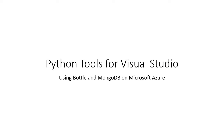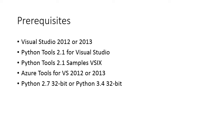Hello. In this video, we'll use Python Tools for Visual Studio to create a simple Pulse application with the Bottle web framework. It will store its data in a MongoDB database on Microsoft Azure, and the application will be hosted in an Azure website. I'll be using Visual Studio 2013 Update 3, PTVS 2.1, including the samples v6, Azure Tools for VS 2013, and Python 3.4.